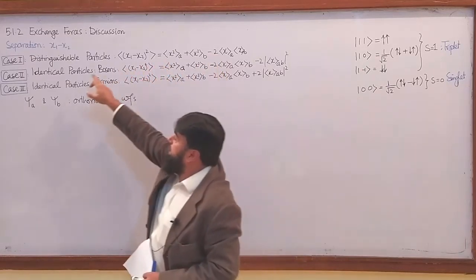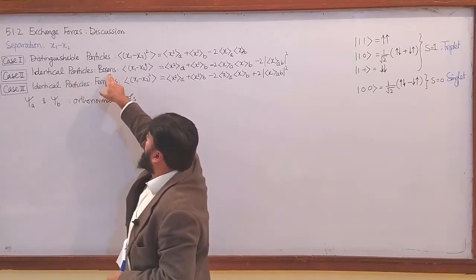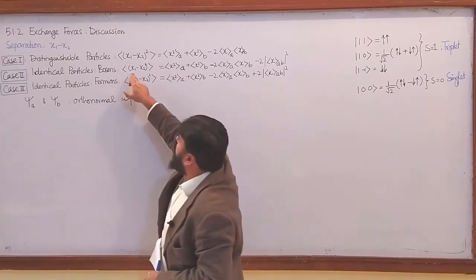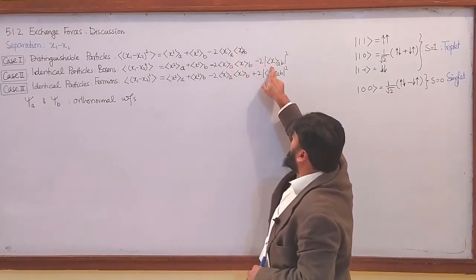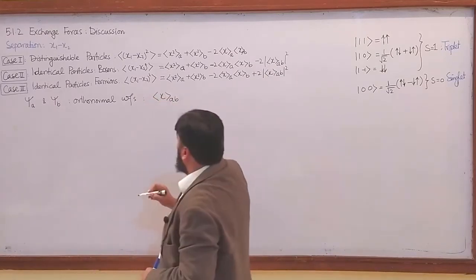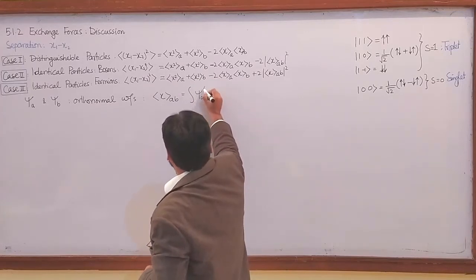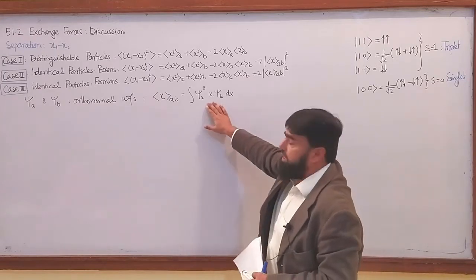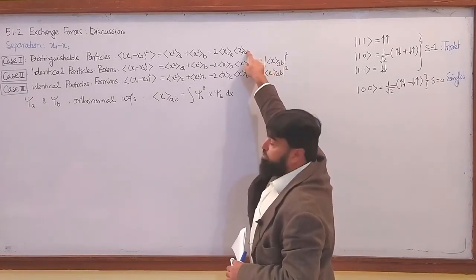When we considered the particles as identical particles, we have two situations: bosons, which have integral spin, and fermions, which have half-integral spin. Their separation came out to be just like the distinguishable particles, but with an additional term — x_ab. If I write this in integral form, it is the integral from minus infinity to plus infinity of psi_a conjugate times x times psi_b dx, in one dimension. This term was an additional term compared to the distinguishable particles.